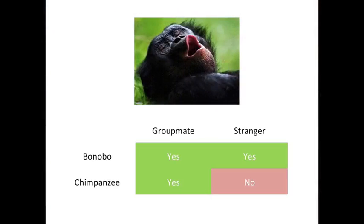In studies of bonobos and lots of other species, the closer the relationship you have with somebody, the more likely you are to contagiously yawn when you see them yawn. We did a study of bonobo contagious yawning, varying who they watched yawning — did they yawn when they saw a group mate yawn, or when they saw a stranger yawn? The answer was that they yawned for both, and in fact they yawned a little bit more for strangers than for their own group mates, which is a lot like their sharing behavior.